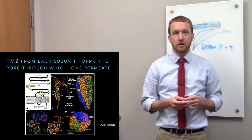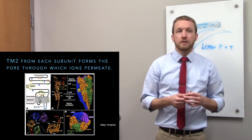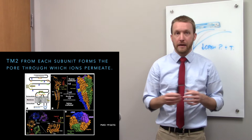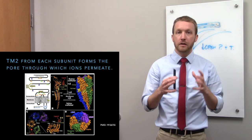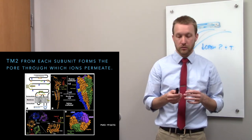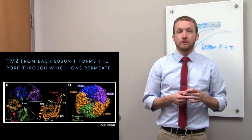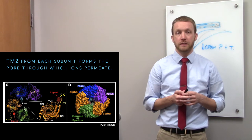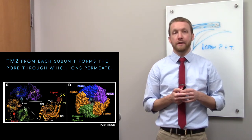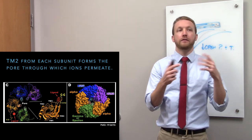Looking at the actual structure of a ligand-gated ion channel, part A shows a schematic of the extracellular ligand-binding domain along with the four transmembrane domains. These subunits come together to form the functional acetylcholine receptor. When ligand binding occurs, the pore opens. In this pentameric structure, the second transmembrane domain from all five subunits orients toward the center to create the pore.